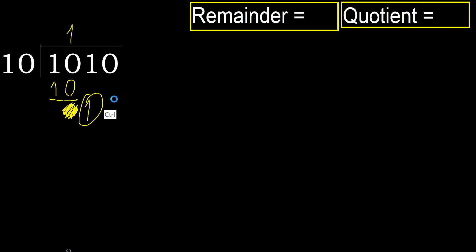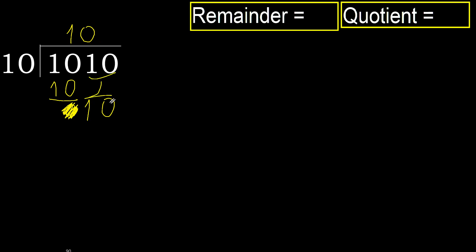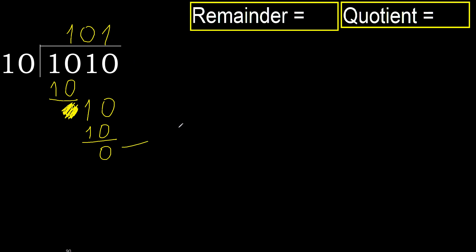1 is less, therefore next. 10 — 2 numbers, therefore complete with 0. Always complete with 0 because there are 2 numbers. 10 multiplied by 1 is 10, not greater — ok. Subtract: 10 minus 10 is 0. There is no next number, therefore finish.